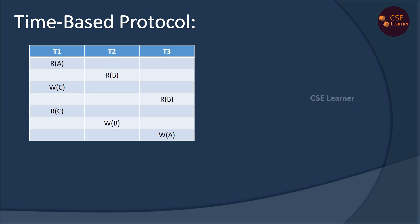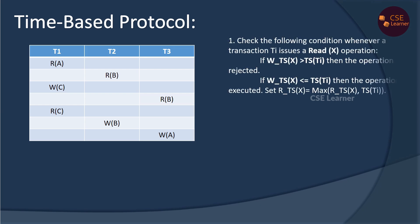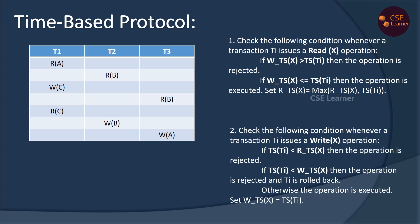Now let's take an example of the timestamp ordering protocol. Here, T1, T2, T3 are three transactions. In these three transactions, read and write operations are performed. We execute these operations based on their timestamps. Read operations have different conditions and write operations have different conditions.